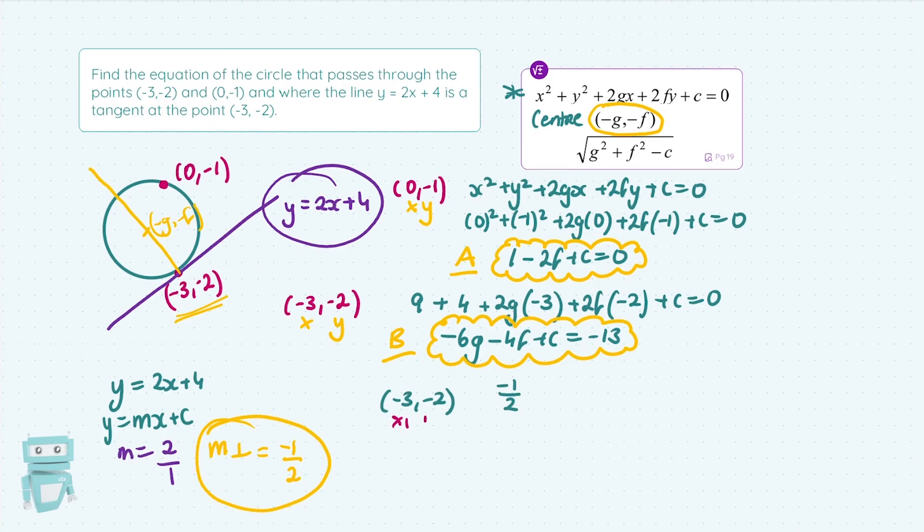Now, we'll find the equation of that perpendicular line by using this slope here, -1/2, and this point here, (-3,-2), since it's on the line. Label your point x₁, y₁, and your slope is m. And then throw it into your formula for the equation of a line that's on page 18. y - y₁ = m(x - x₁). Tidy it up. Bring that 2 across in front and then tidy it up whatever way you wish. And we have x + 2y = -7.